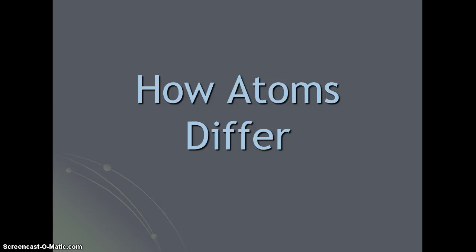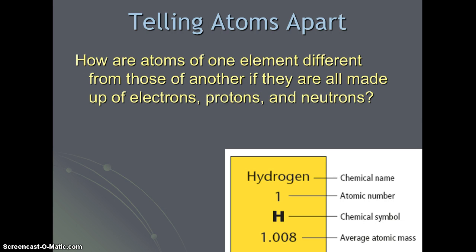There are over 110 elements on the periodic table. How then are atoms of one element different from those of another if they are all made up of electrons, protons, and neutrons?